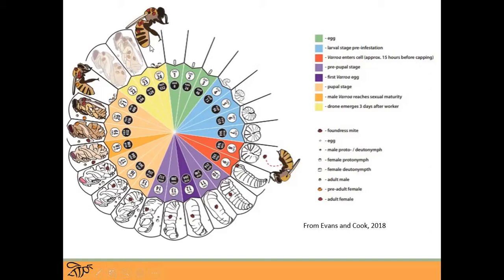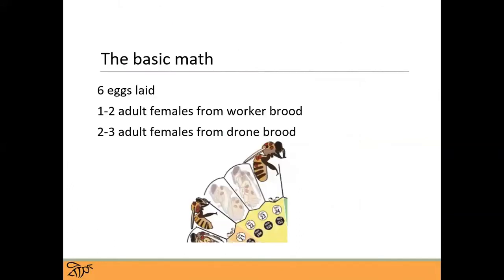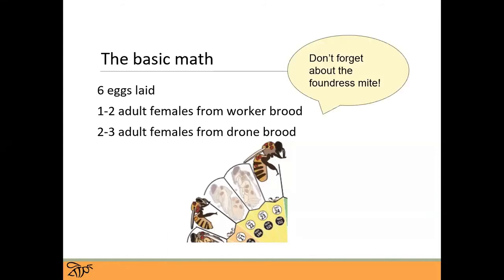The life cycle of the varroa mite is so tightly linked with the development and the amount of brood present in your colony. In the basic math of varroa, when a foundress mite jumps into that cell, she is going to be laying approximately six eggs, and one to two of those will be adult fertile females emerging with that young worker bee. There is the potential for two to three adult females to be produced on drone brood. And don't forget that foundress mite also comes out — so every time you have a worker bee emerging, you have two to three fertile varroa mites coming out, with three to four fertile varroa mites coming out of every successful drone brood.